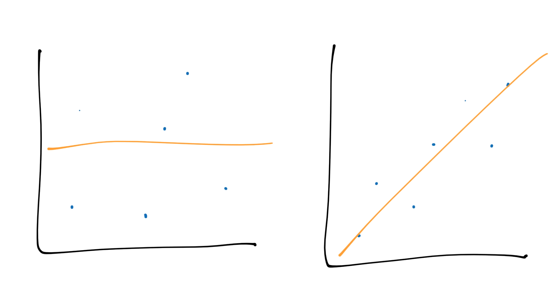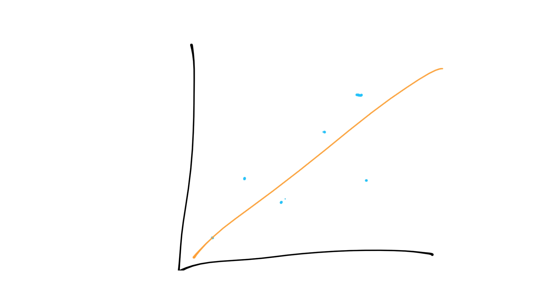So we know it's about the distance — but how do we actually calculate this? Well, we use squared error. We've got a graph with some data points and our best fit line. The error is the distance between the point and the best fit line, and what we say is: it's not just error, we want to square that value. So squared error is e squared.